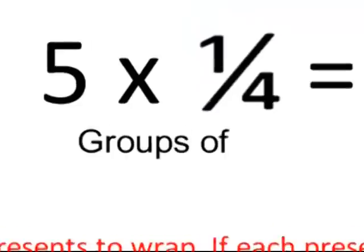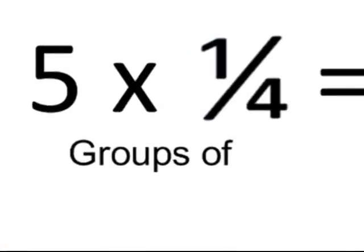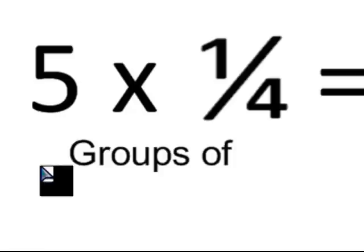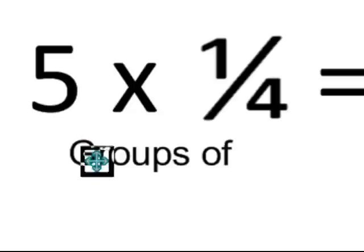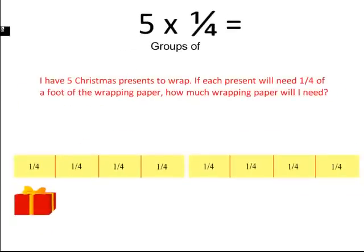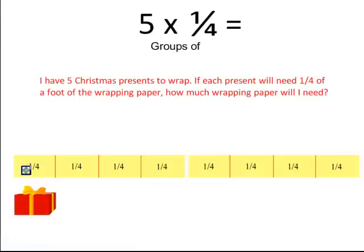Now with fractions, a number problem might look like this: 5 times 1 fourth equals. We read this the same way as 45 times 16 — here I have 5 groups of 1 fourth. A story problem for this example would be: I have 5 Christmas presents to wrap. If each present will need 1 fourth of a foot of wrapping paper, how much wrapping paper will I need?